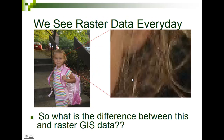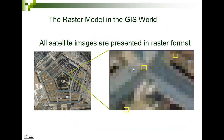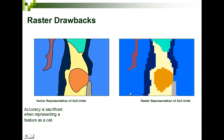We see raster data every day. This is just a raster image that I took and zoomed in — there are little pixels there. But these aren't assigned data coordinates. The GIS raster back here, we can assign latitude and longitude to it and compare it with other remotely sensed imagery or GIS data.